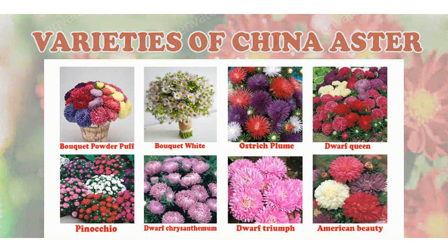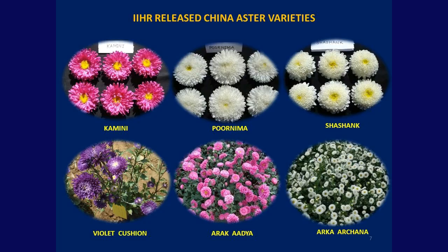Varieties of China Aster developed outside India include Bouquet Powder Puff, Bouquet White, Ostrich Plume, Dwarf Queen, Pinocchio, Dwarf Chrysanthemum, Dwarf Triumph, and American Beauty. Varieties released from the Indian Institute of Horticultural Research include Arka Kamani, Arka Purnima, Arka Shashank Violet Cushion, Arka Adya and Arka Archana.